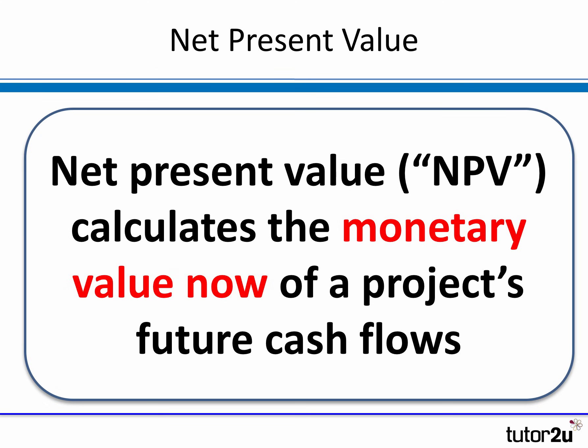The basic idea of NPV — net present value — is to try to work out the monetary value now of the various future cash flows associated with the project, and then to add them all up and see whether the project has a positive net present value.